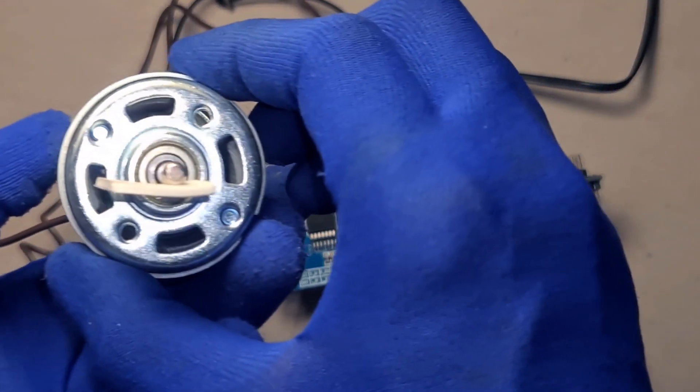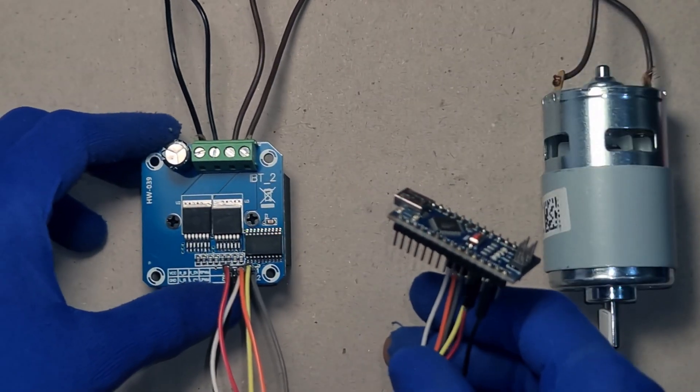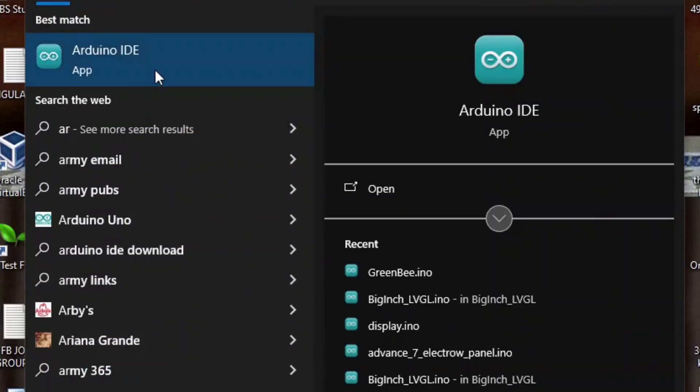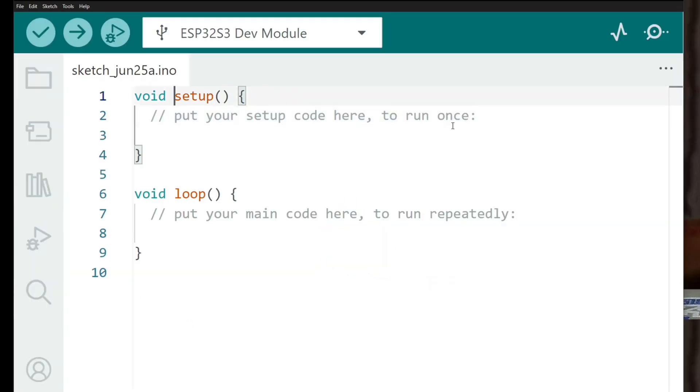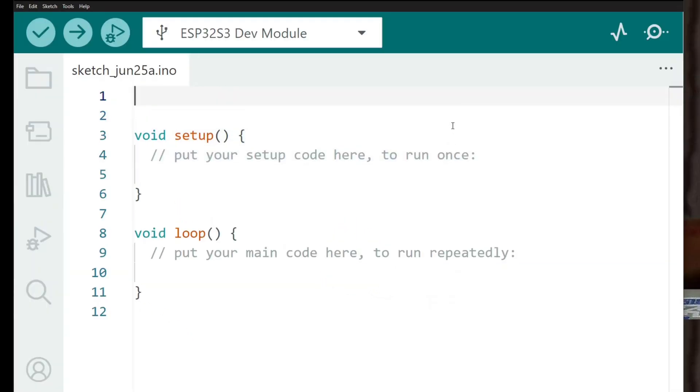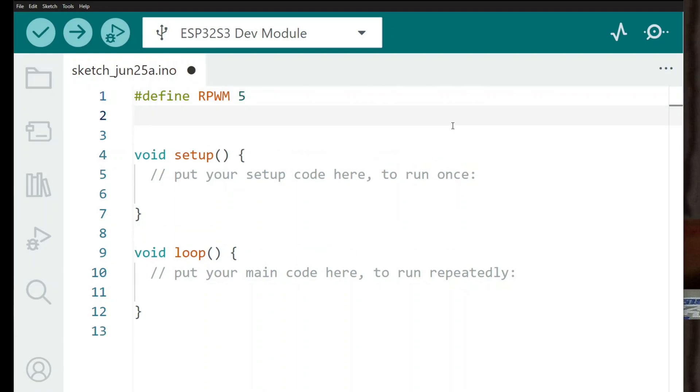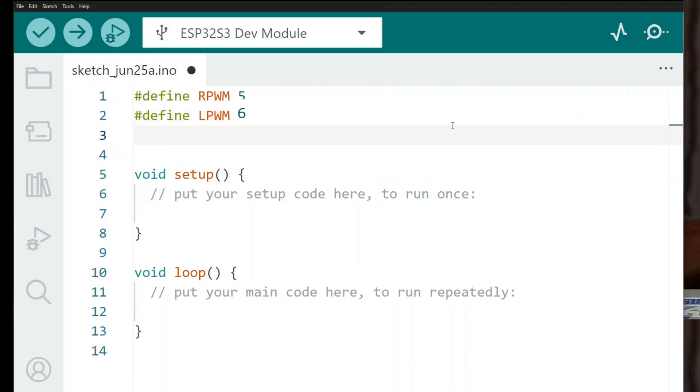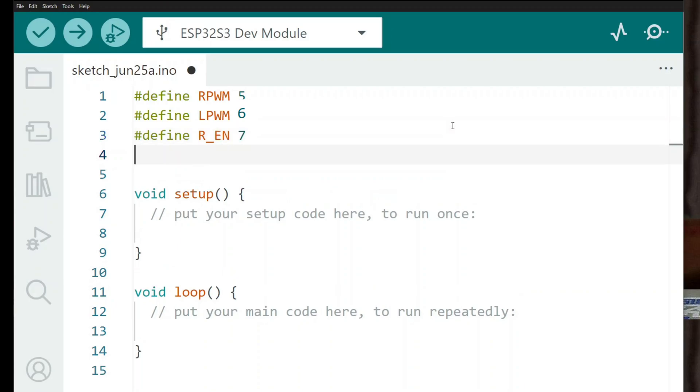In the next part, I'll show you how to program Arduino Nano and start running a 775 motor with some fun speed and direction patterns. First, I define the PWM and enable pin connections from pins D5 to D8 on the Arduino Nano.